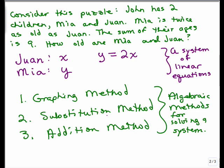It also says the sum of their ages is nine. So that means when I add the two numbers, I get nine. And together, these two equations make up a system of linear equations.